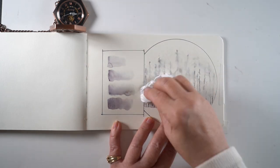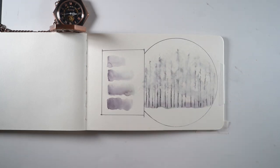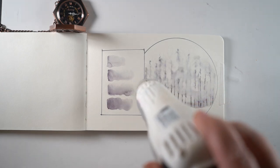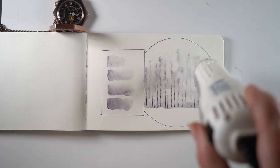And then dab some off. You'll end up with a little bit of lines in there from the trees and then lots of just gray mushiness. And that's perfect for this because then we can add detail on top of it.